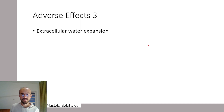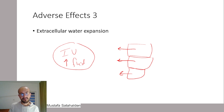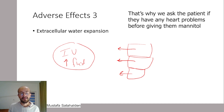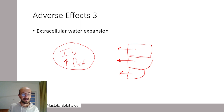Mannitol also leads to extracellular water expansion. It drains fluid from the cells into the intravascular space, increasing the intravascular fluid volume. If a patient has compensated heart failure, this increase in intravascular volume leads to decompensation of their condition, because the patient is adapted to a certain amount of fluid in their intravascular volume. Using osmotic diuretics increases that amount, which can lead to decompensation of heart failure and pulmonary edema.